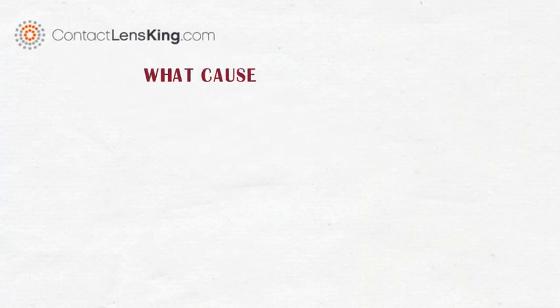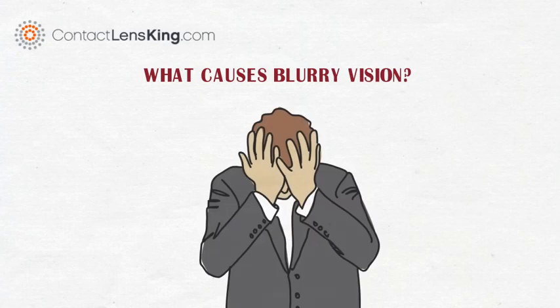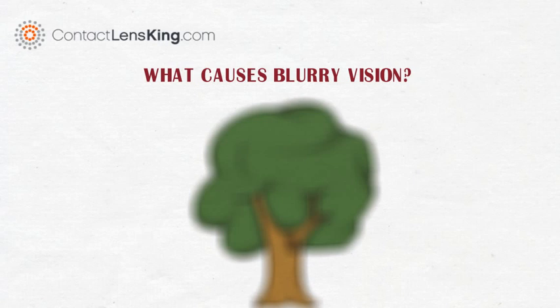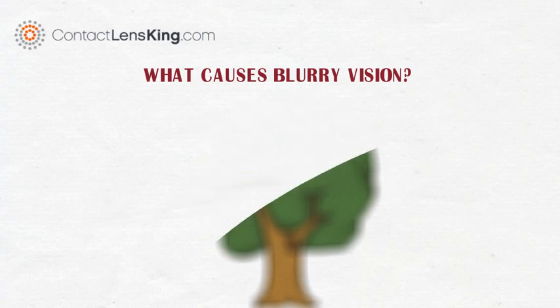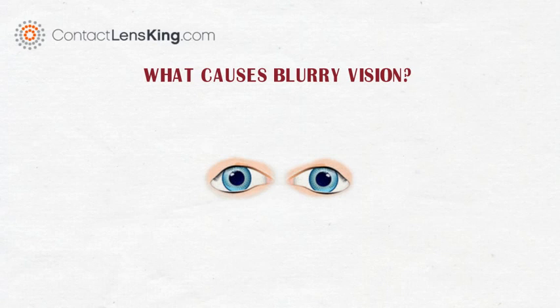Contact Lens King presents: What causes blurry vision in one or both eyes? Blurry vision occurs when a person is unable to perceive clear or sharp images. This disorder usually impacts both eyes, however there are cases where only one eye is affected.